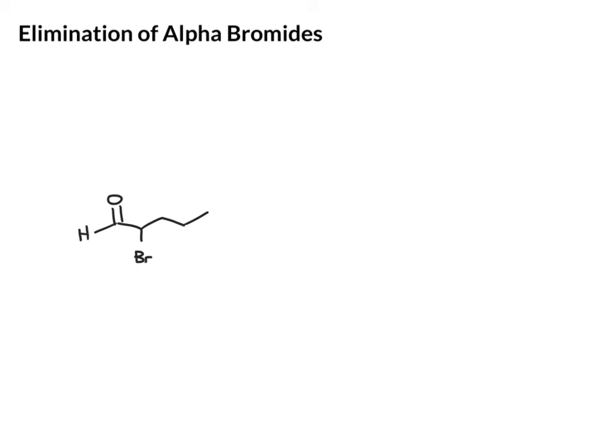We find that the alpha bromides you can make from the halogenation reaction under acidic conditions can be quite useful. So let's say we have this alpha bromide. Just to recap, the way you would make this, we would start with the corresponding aldehyde, and you could use Br2 and acetic acid to brominate at the alpha position.